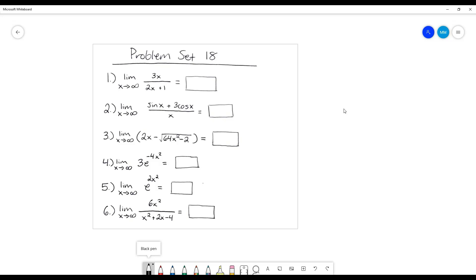So for number one, in this case, I see that it's the limit of 3x over 2x plus 1, and I see that the power of the numerator is 1. The power of the denominator is also 1, and since they have the same power, this limit as I approach infinity is just the ratio of the coefficient, so it's just going to be 3 over 2.